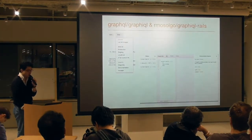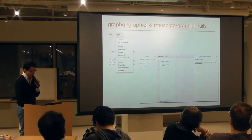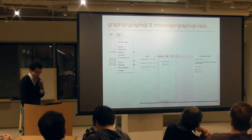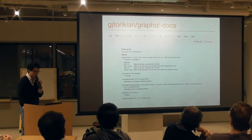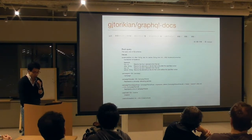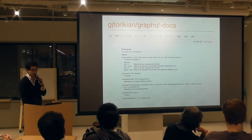First of all, GraphiQL and GraphiQL Rails is a must-have tool. GraphiQL is like an IDE for GraphQL — it supports documentation, explorer, tab completion, and query history. I also recommend GraphQL Docs: you can build a static page from your schema file. It's much more readable than the schema file because it supports color highlighting and in-page links.